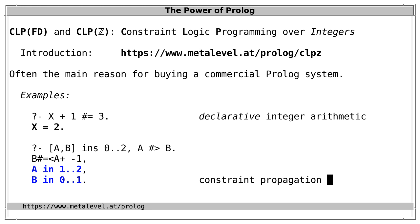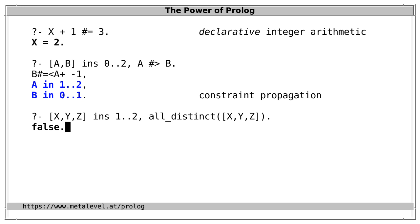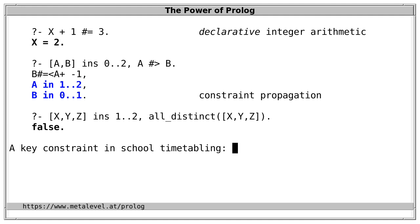Constraint propagation can detect more involved inconsistencies. For example, three variables x, y, z with domain {1,2} and an all_distinct constraint — the system immediately tells us there's no solution. A key constraint for school timetabling is that there can be at most one lesson per time slot: a class can't have English and history or two lessons of English simultaneously. We express this by requiring all time slot variables to be pairwise distinct.